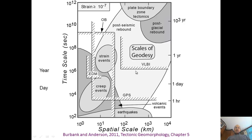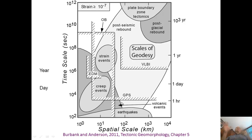VLBI — Very Long Baseline Interferometry — is an older method that was the first way to measure the actual motion of continents across thousands of kilometers, like North America to Europe. GPS is really revolutionary because it applies to many length scales and is easy to use — we all have the technology in our phones now.